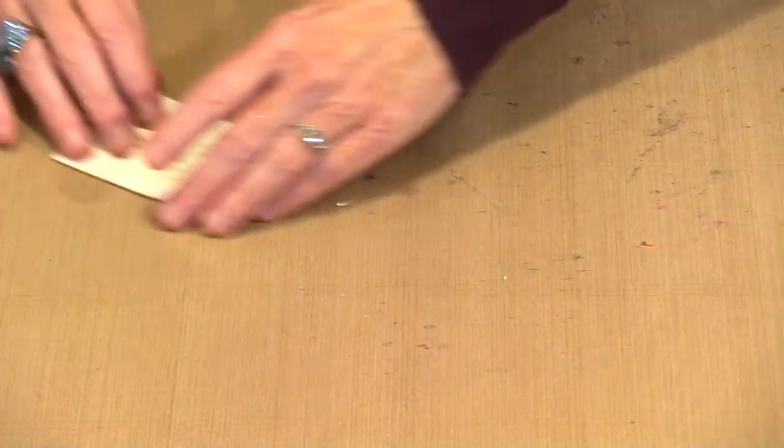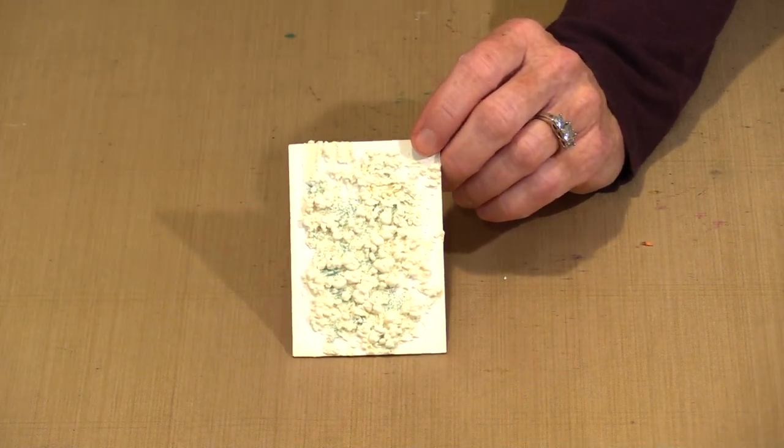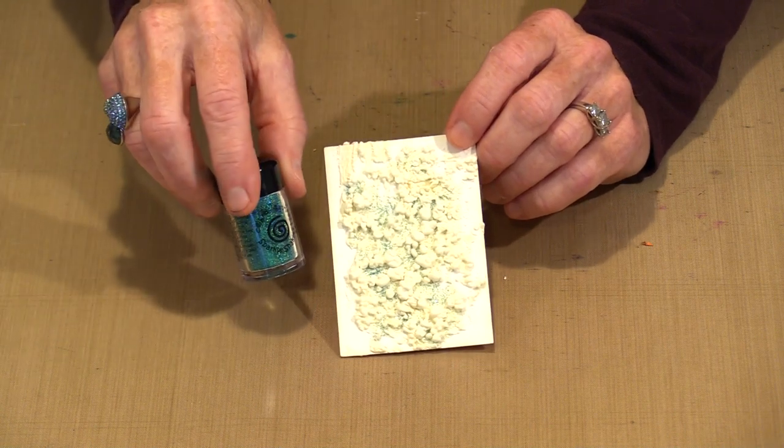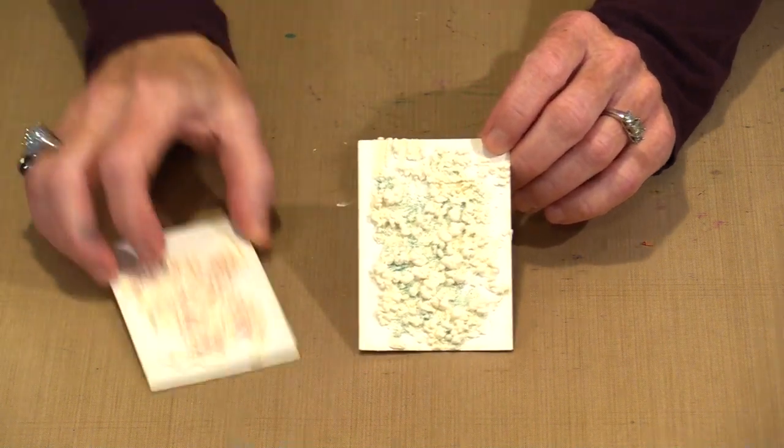So things continue to get more interesting. You can add what I think of as inclusions. So this is some of the Cosmic Shimmer. This is one of the Shimmer Shakers.